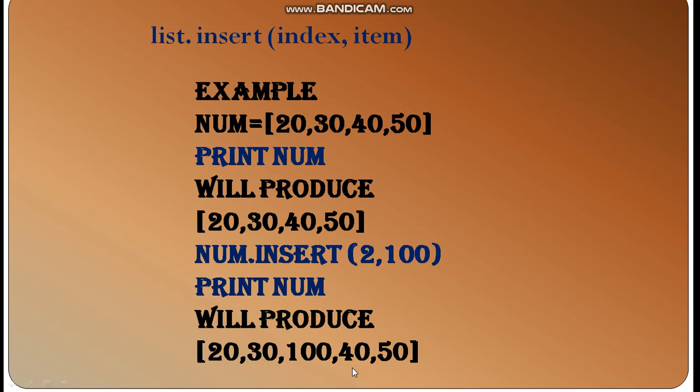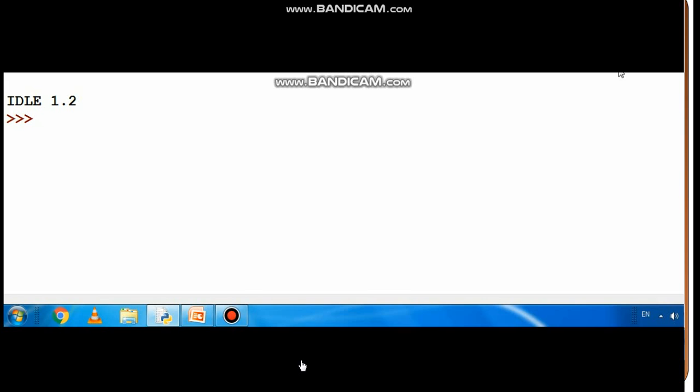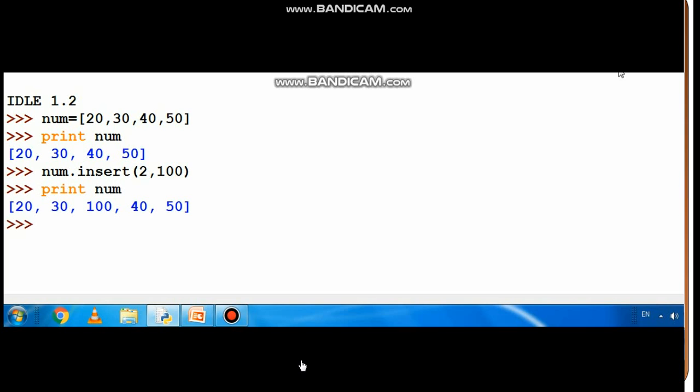Now let's see num.insert. We have to print the list. The values are 20, 30, 40, and 50. If we print it, we get 20, 30, 40, 50. Now we use num.insert(2, 100). The index is 2, so when we print num, we can see 20, 30, 100, 40, 50.